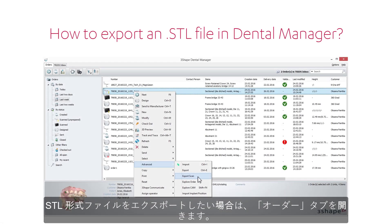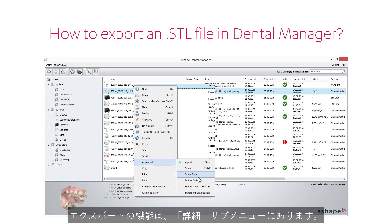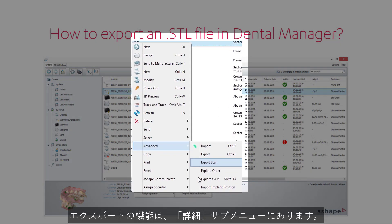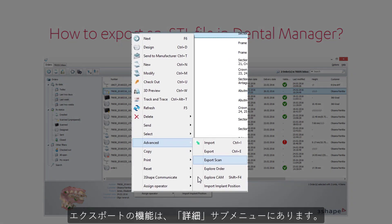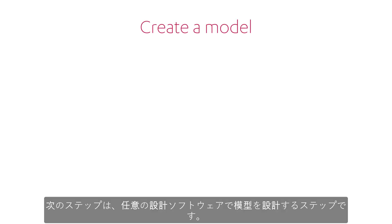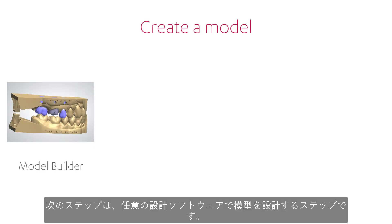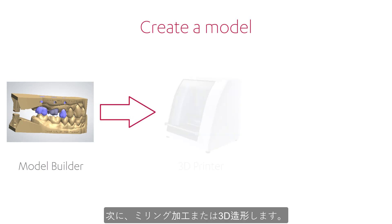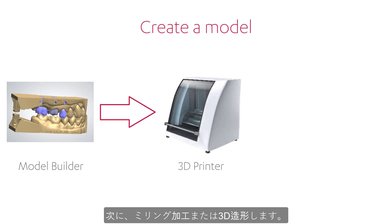When you want to export an STL file, you need to enter the Orders tab. There, in the Advanced submenu, you'll find this option. The next step is to create a model of the case using your software of choice, then print it or mill it.